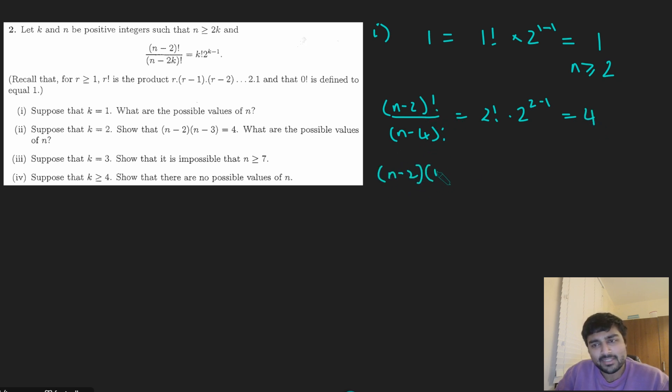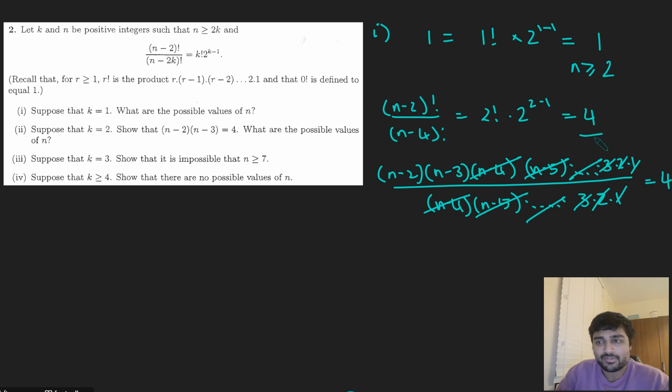Imagine I just write out these terms here. This is (n - 2)(n - 3)(n - 4)(n - 5) times so on, all the way down to 3 times 2 times 1. And on the bottom, I've got (n - 4)(n - 5) times blah, blah, blah, all the way down to 3 times 2 times 1. That cancels with that, that cancels with that. All of these terms are going to cancel, 3 with 3, 2 with 2, 1 with 1. And I've still got this 4 from before on the right-hand side. And now I just get (n - 2)(n - 3) equals 4 as required.